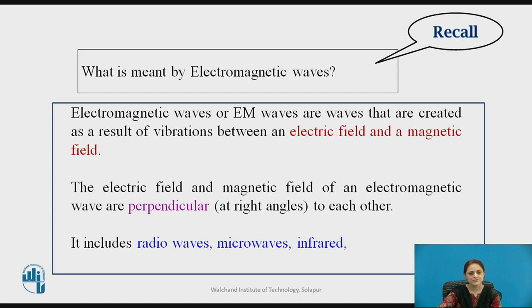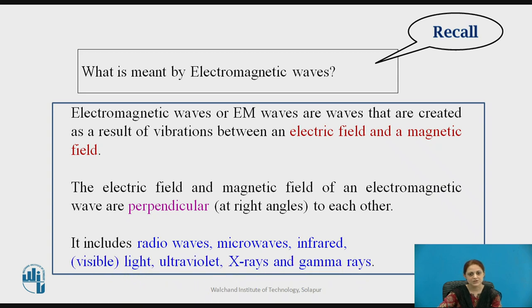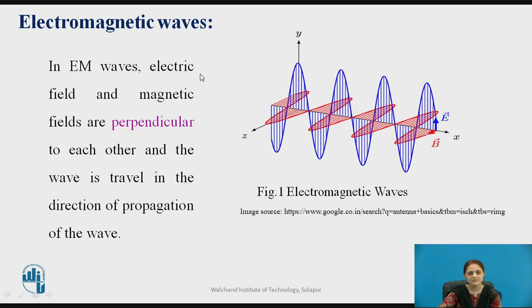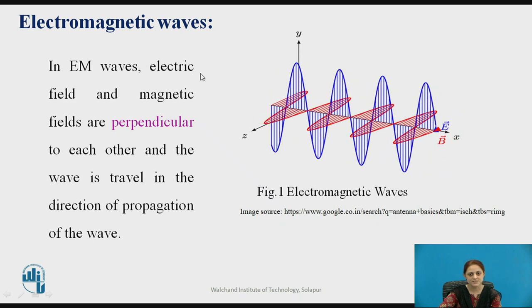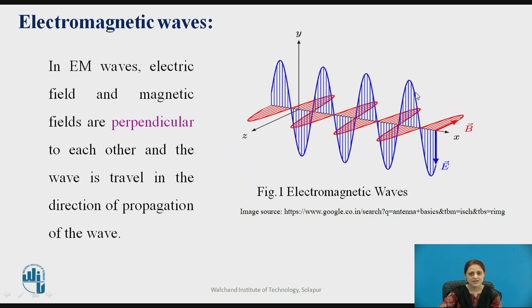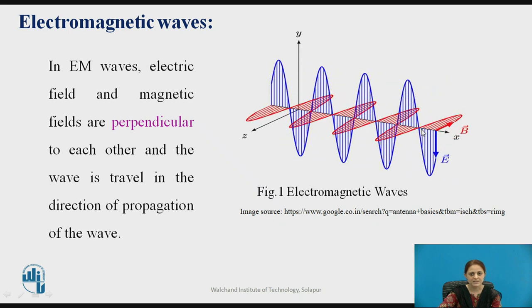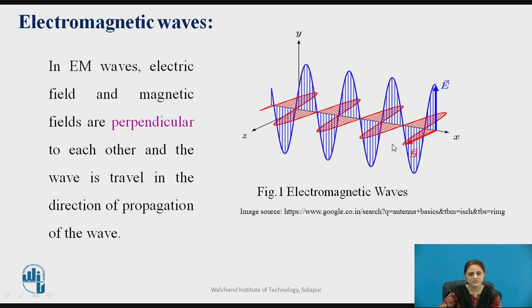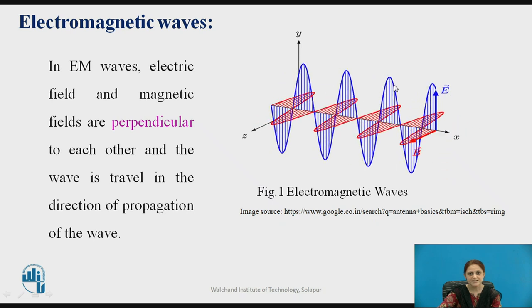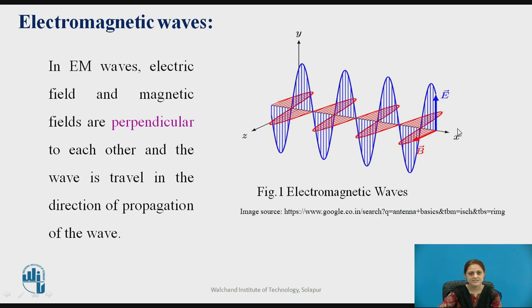These types of waves include radio waves, microwaves, infrared, light, ultraviolet, x-rays, and gamma rays. In EM waves the electric field and the magnetic field are perpendicular to each other. In this figure, the red wave shows the magnetic field and the blue wave shows the electric field. The wave travels in the direction of propagation — in this example, in the x direction.